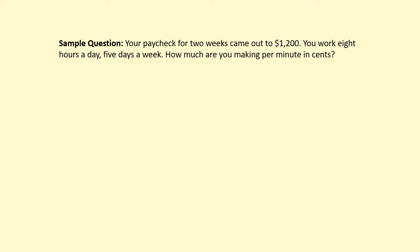We have a lot of different units to deal with, so in more complicated problems like this, I like to write out all of the ratios. Remember, dimensional analysis is based on rates, so I'm going to set up my rates here. Reading through the problem, your paycheck for two weeks comes out to $1,200, so my first rate is $1,200 every two weeks.